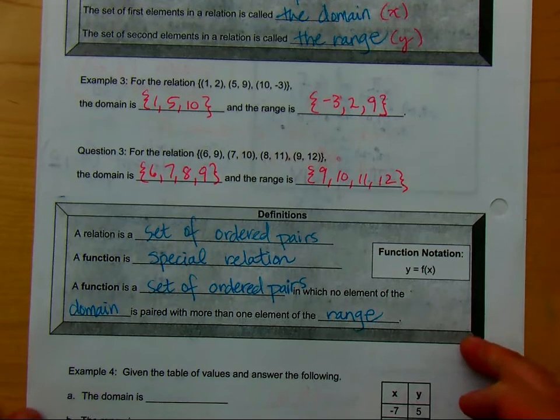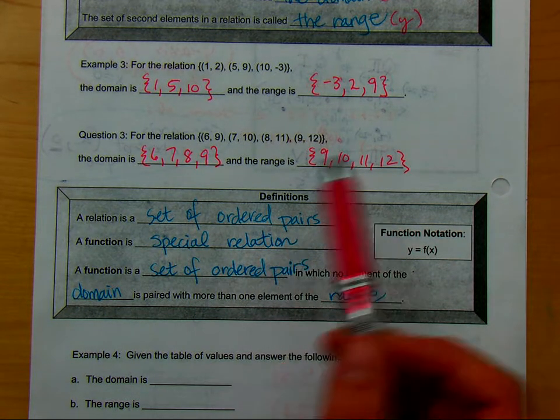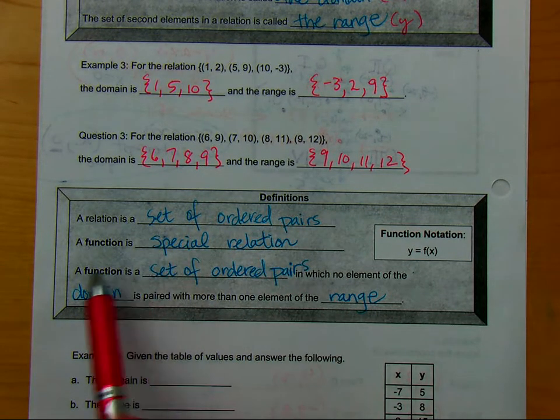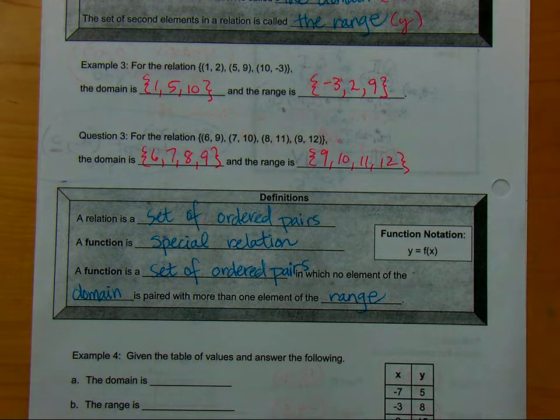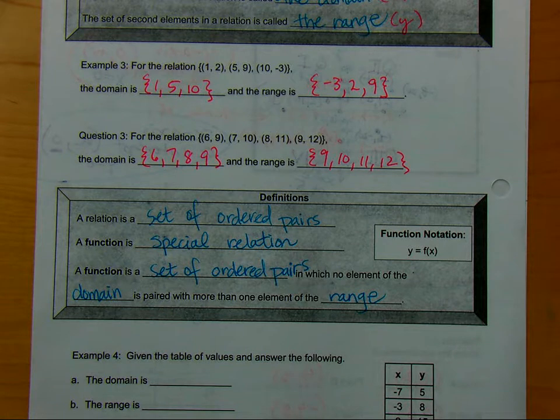That's what the domain and the range are. So the next thing is a relation, we said, is a set of ordered pairs. And so when we had the set of ordered pairs here, we called that a relation. Now we have certain kinds of relations. A special kind of relation is called a function, but not all relations are functions. And you can kind of relate this to your everyday life. This is where I get a little personal. Not all of your relationships are functional relationships, sorry to say.